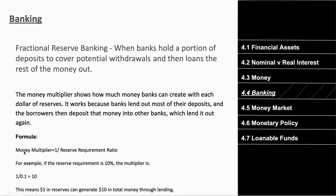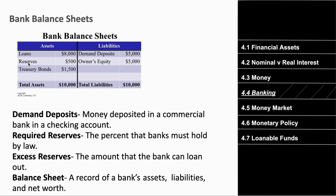The money multiplier is calculated using one divided by the reserve requirement ratio. If the reserve requirement is ten percent (0.1), the money multiplier is 10x. So if you deposit one hundred dollars, that generates a thousand dollars to the economy. If you have one dollar in reserve, that generates ten dollars in total money.